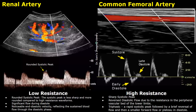At end diastole, there is a noticeable end diastolic velocity — it is not zero, approximately 20 centimeters per second. This is another feature of a low resistance waveform. There is no flow reversal, no flow below the baseline — only continuous forward flow. This is another feature of a low resistance waveform.